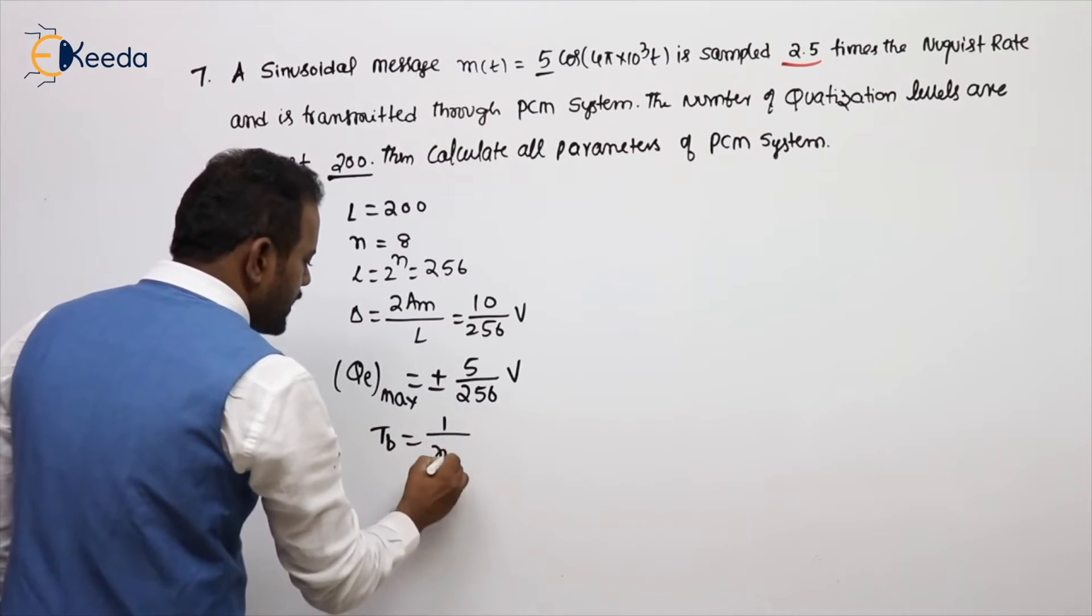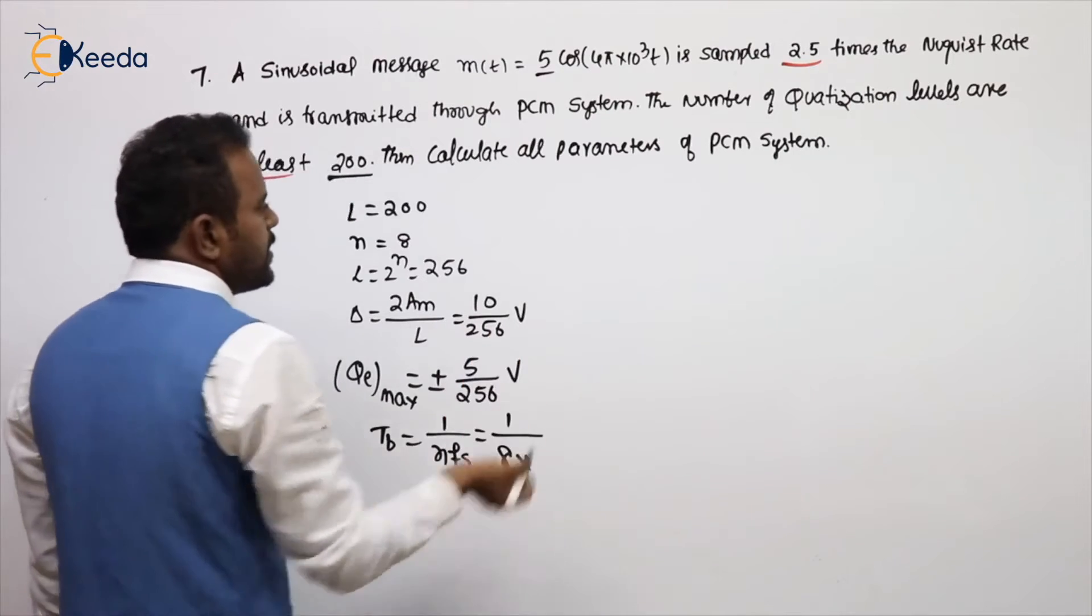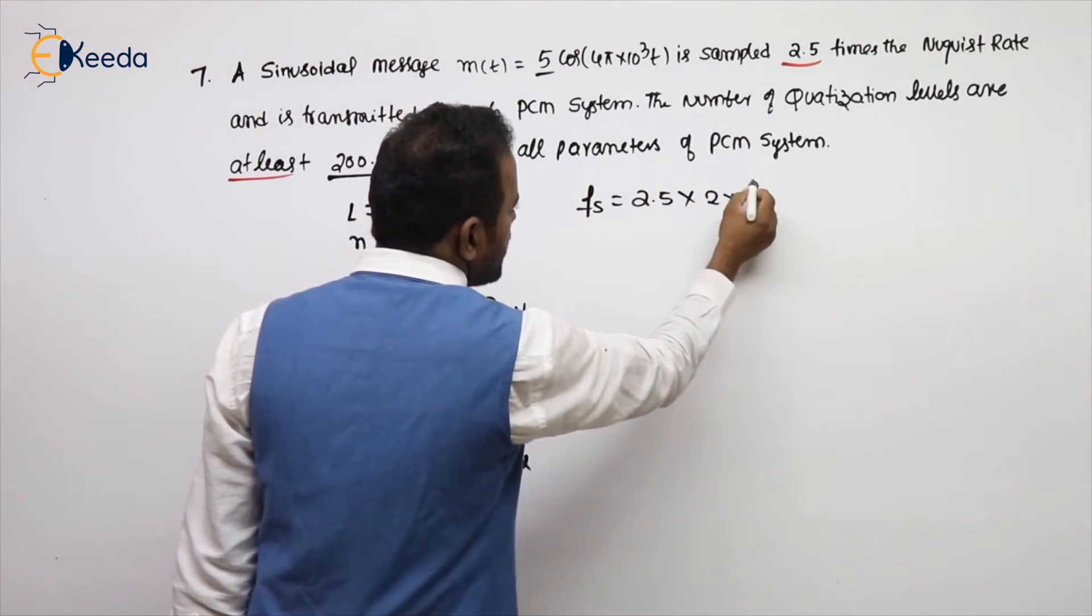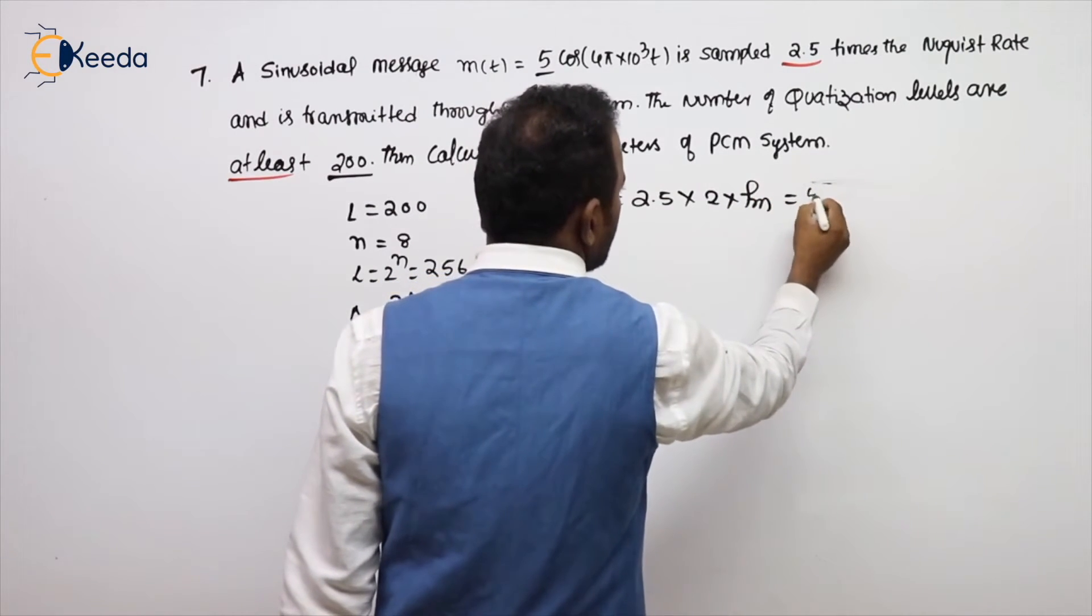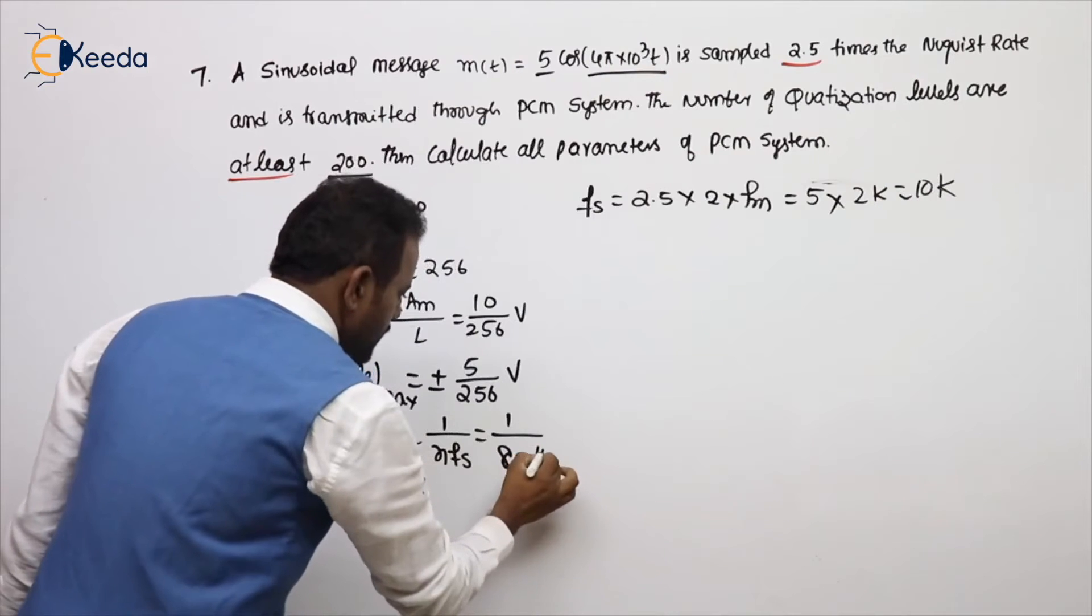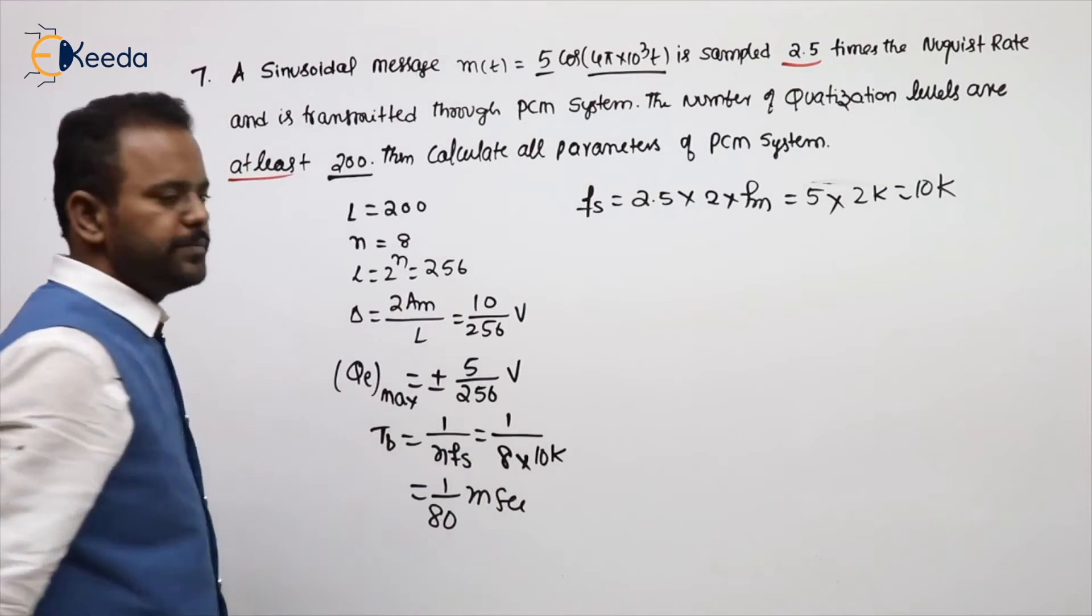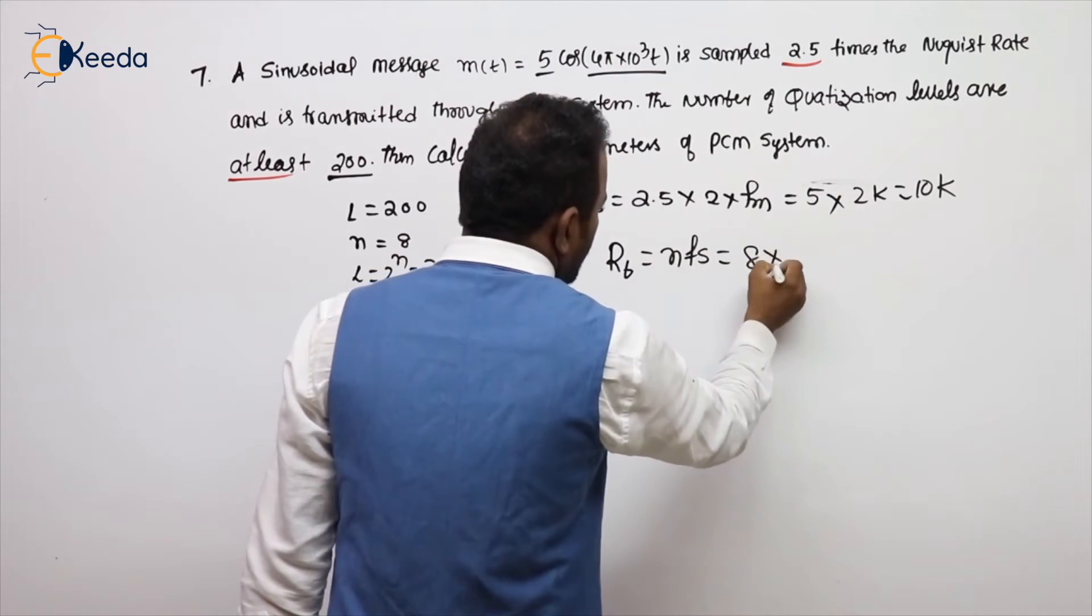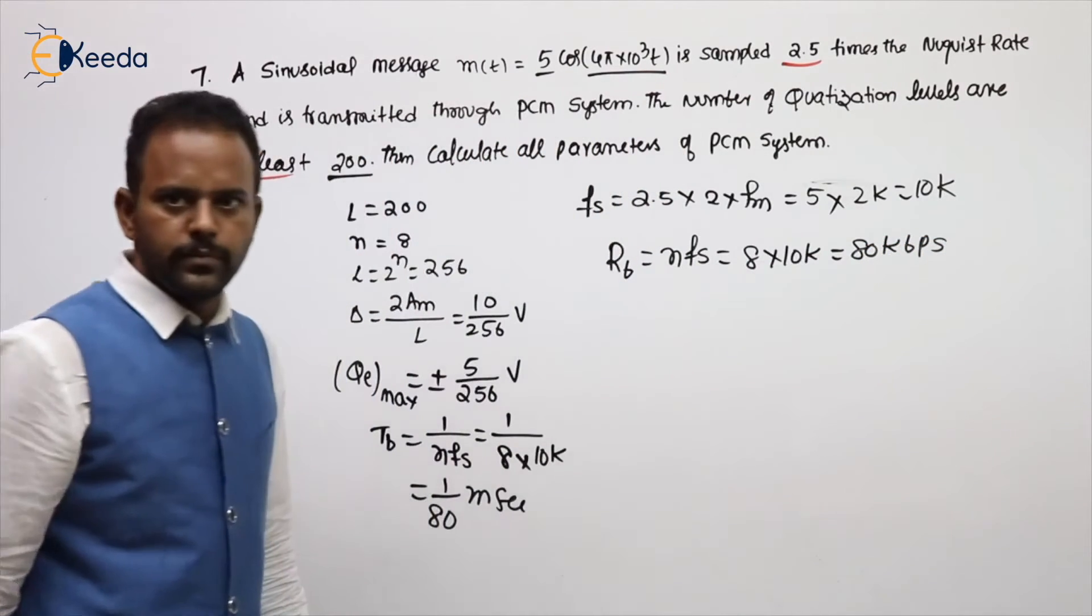After this, then calculate TB. TB formula is 1 by NFS. N value is 8. FS, what is the FS is given sir? 2.5 times Nyquist rate. Nyquist rate is 2FM, that is 2.5 into 2 is 5. See the message, what is the FM? 2K, so 10K. So 10K. So this is nothing but 1 by 8K means millisecond. What is the bit rate sir? Bit rate RB equal to NFS sir. 8 into 10K will be 80 Kbps sir.